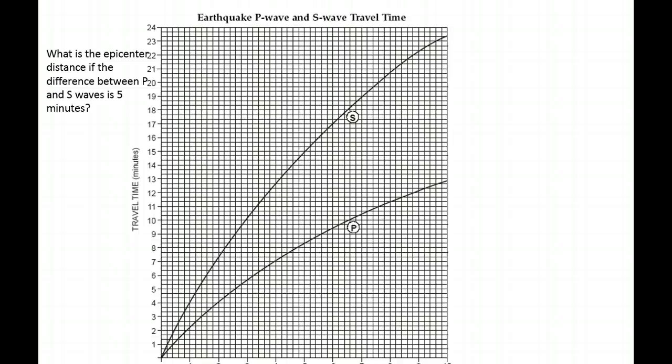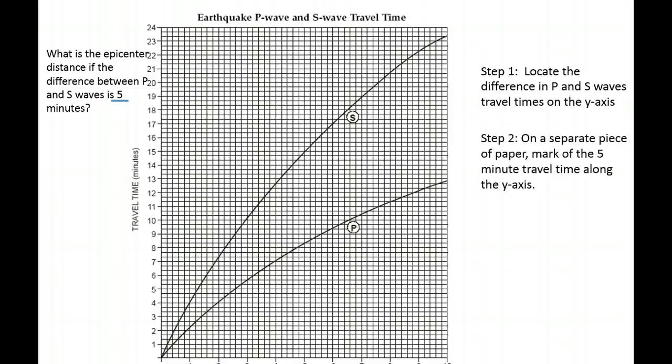All right, well, here we're going to start instead of with the epicenter distance, we know the travel time. So we're going to go and see what the travel time is. The first thing we have to do is locate the travel time on the y-axis. And so that would be 5 minutes. We're going to take a separate piece of paper. Now this step is very important. And we're going to mark off the 5-minute travel time along the y-axis on your paper. So that means you're going to make two marks, one at the 0 and one at the 5-minute mark.